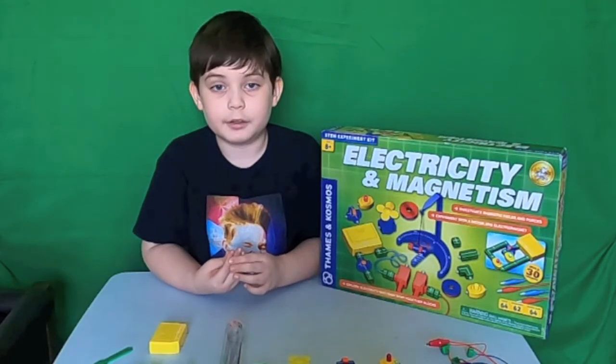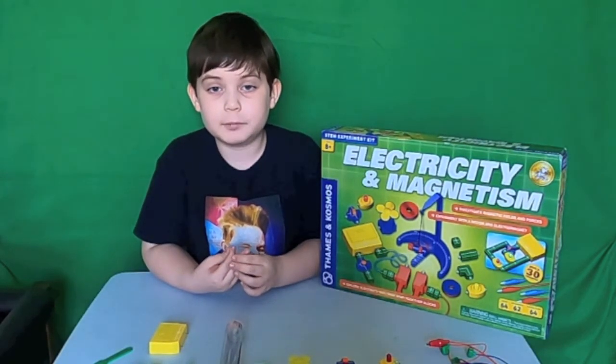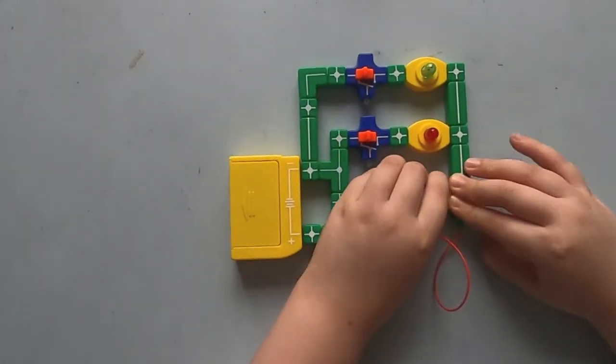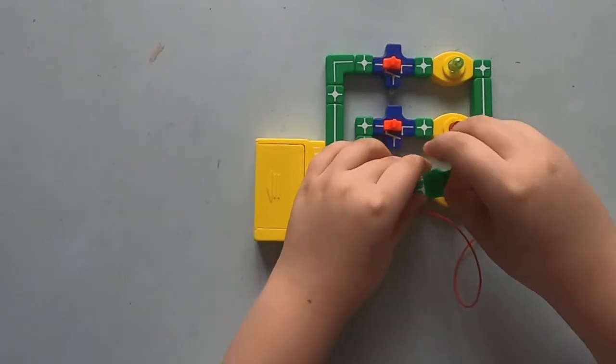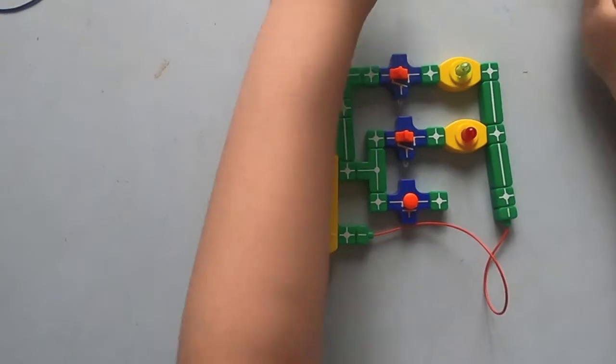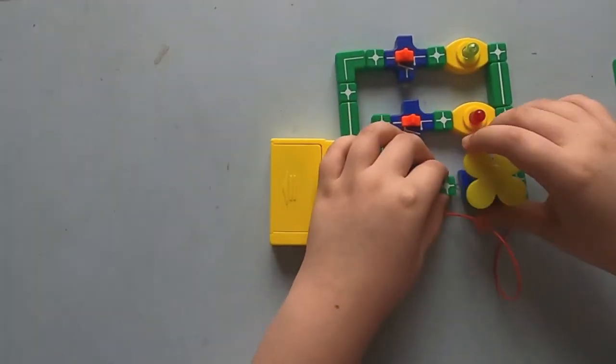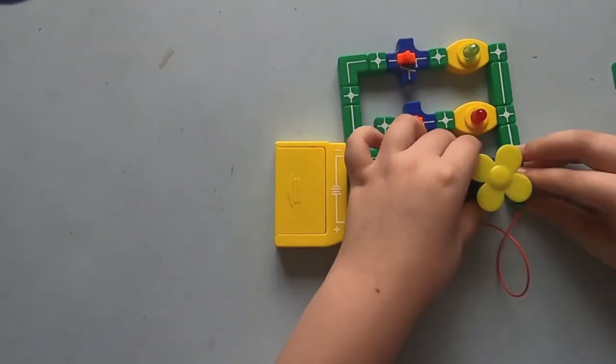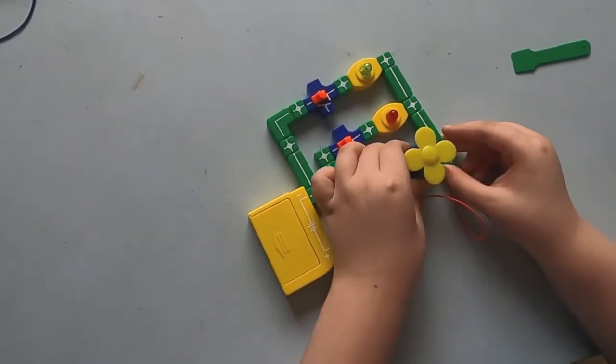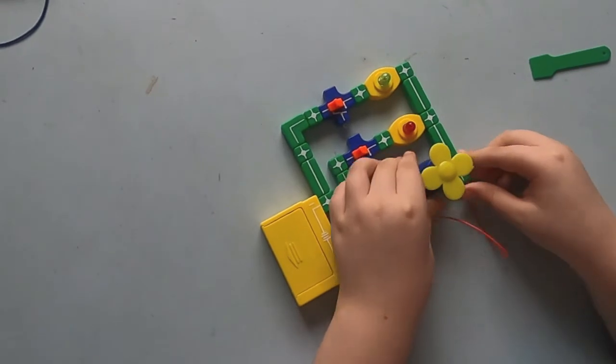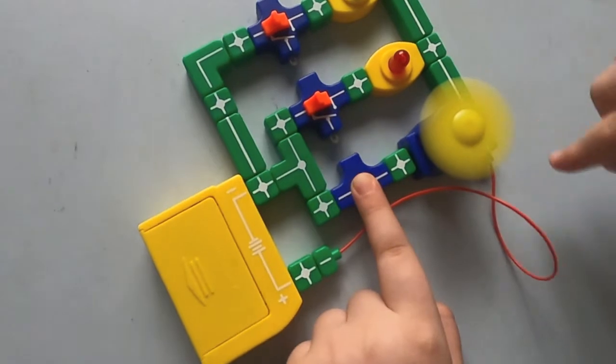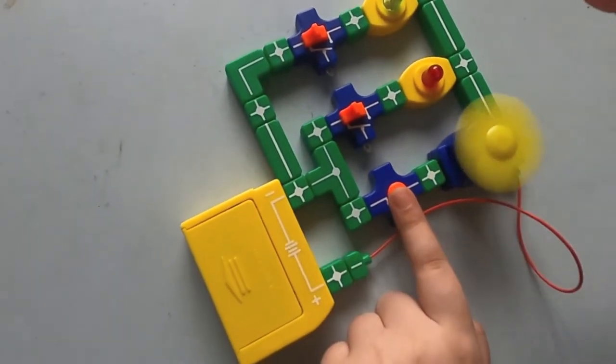Now let's add a fan motor to the circuit and see what happens when I push the button. Now I will replace the yellow light with a fan motor. Everything else stays the same for this circuit. Just like before, as I push the button and flip the switches, the fan and lights go on and off.